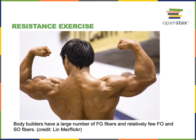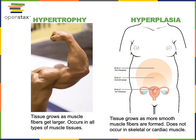As each individual muscle fiber hypertrophies, it develops more myofibrils within each cell. Hypertrophy is when a tissue grows as a result of cells increasing in size; the individual myofibers become larger by containing a greater number of myofibrils, but the number of cells does not increase. In contrast, hyperplasia is when a tissue increases in size as a result of cell division — for example, smooth muscle grows during pregnancy through hyperplasia, where cell division produces more smooth muscle cells.